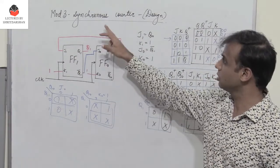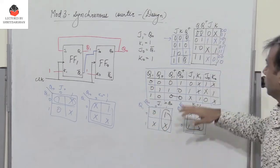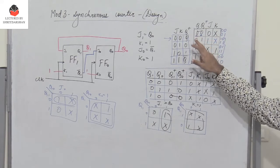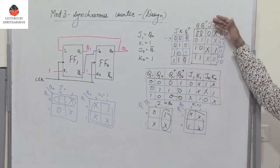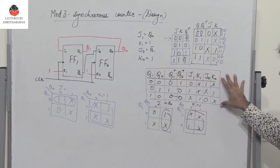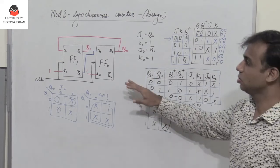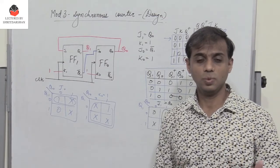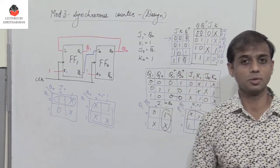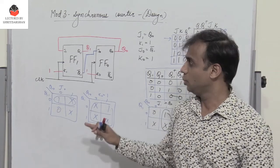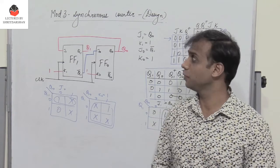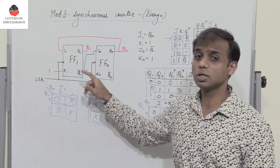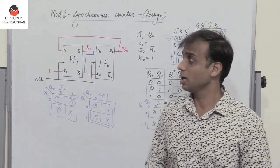This is how we can design a mod 3 synchronous counter using JK flip-flops. The output changes from 00 to 01, to 10, and back to 00. If you know the excitation table you can derive the full state table, solve using K-maps, and do the design easily. In the next lecture we shall see the working of a mod 3 asynchronous counter, where both flip-flops are not triggered by the same clock.